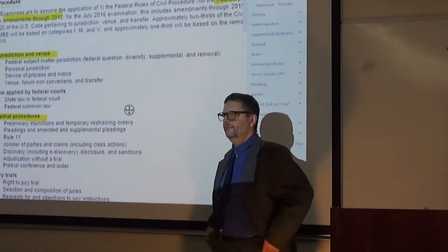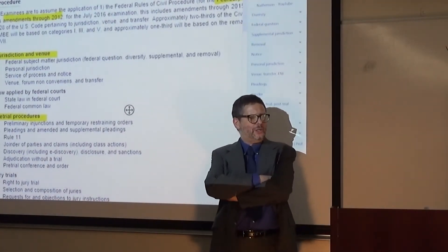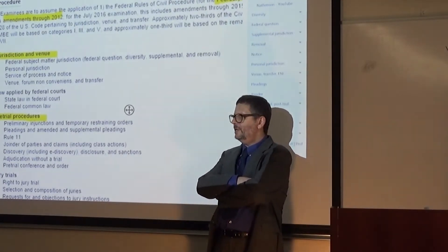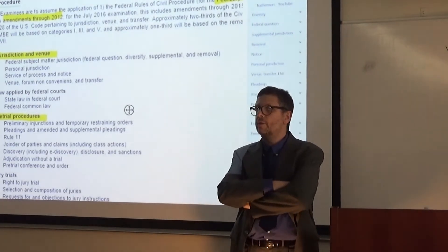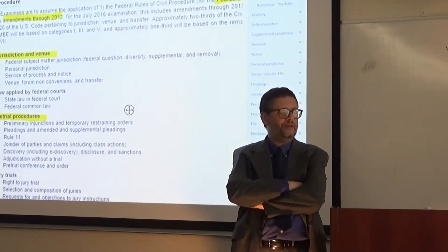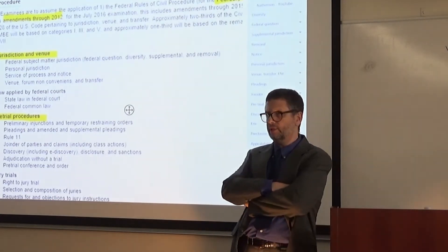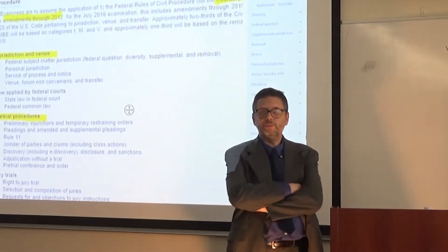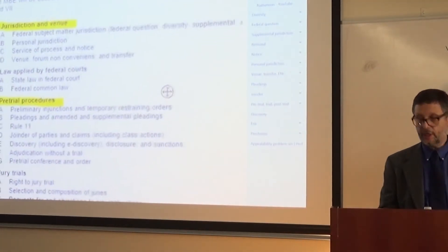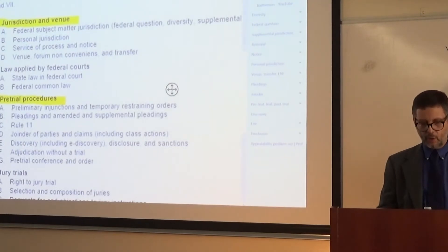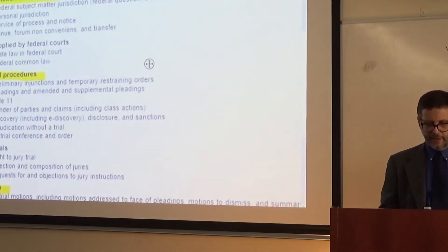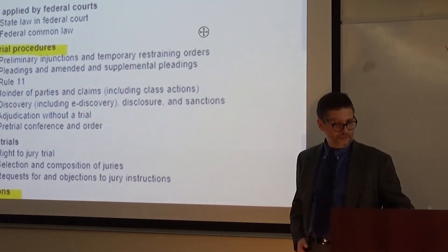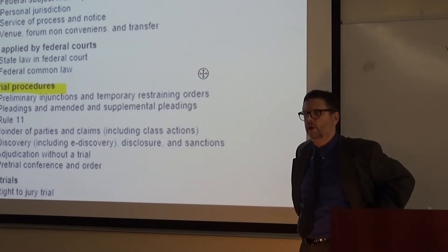The next thing we want to talk about is what topics are likely to be on the multi-state bar examination. These are topics that will be tested on multiple choice. There's going to be a total of 27 multiple choice questions on the February 2016 bar exam based on civil procedure. Two-thirds of those questions — in other words, 18 questions — are going to come from three main areas. The first is jurisdiction and venue, such as personal jurisdiction, subject matter jurisdiction, venue, notice, and things like that.